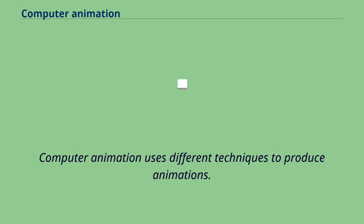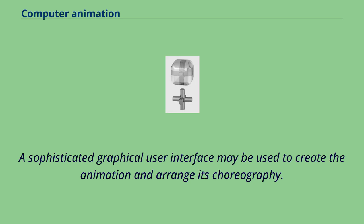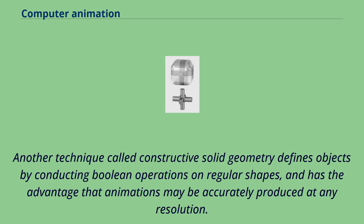Computer animation uses different techniques to produce animations. Most frequently, sophisticated mathematics is used to manipulate complex three-dimensional polygons, apply textures, lighting and other effects to the polygons, and finally render the complete image. A sophisticated graphical user interface may be used to create the animation and arrange its choreography. Another technique called constructive solid geometry defines objects by conducting Boolean operations on regular shapes, and has the advantage that animations may be accurately produced at any resolution.